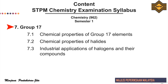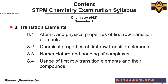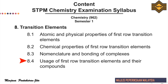Topic 7 is group 17. The subtopics are: 7.1 chemical properties of group 17 elements, 7.2 chemical properties of halides, and 7.3 industrial applications of halogens and their compounds. The last topic for semester 1 is Topic 8, transition elements. This topic has four subtopics: 8.1 atomic and physical properties of first row transition elements, 8.2 chemical properties of first row transition elements, 8.3 nomenclature and bonding of complexes, and 8.4 usage of first row transition elements.